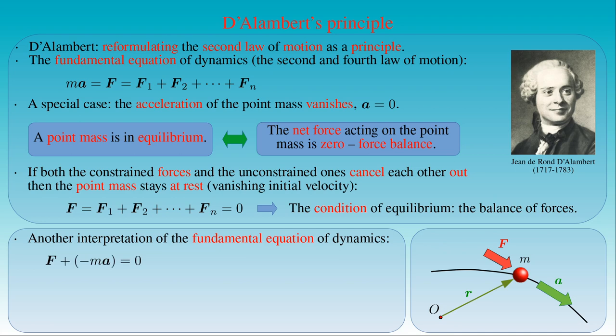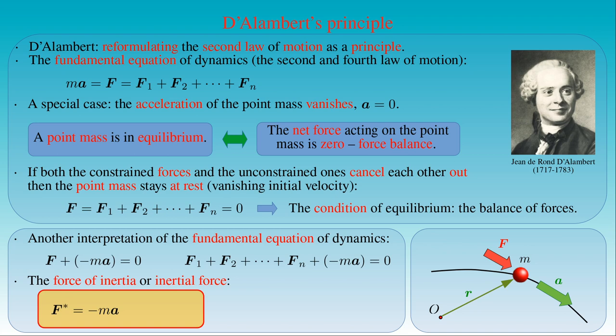That is, f1 plus f2 plus ... plus fn plus the term minus m times a equals zero. The negative product of the mass of the point-like body and its acceleration with respect to an inertial frame can also be considered as a force — the force of inertia, as D'Alembert called it. The inertial force f* is given by minus m times a, or minus m times the second-order time derivative of the position vector r. This is a fictitious force, also called a pseudo-force, since it is created by motion.